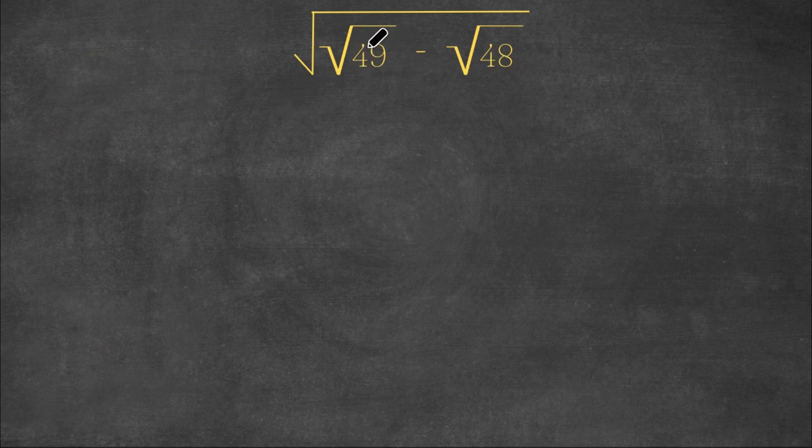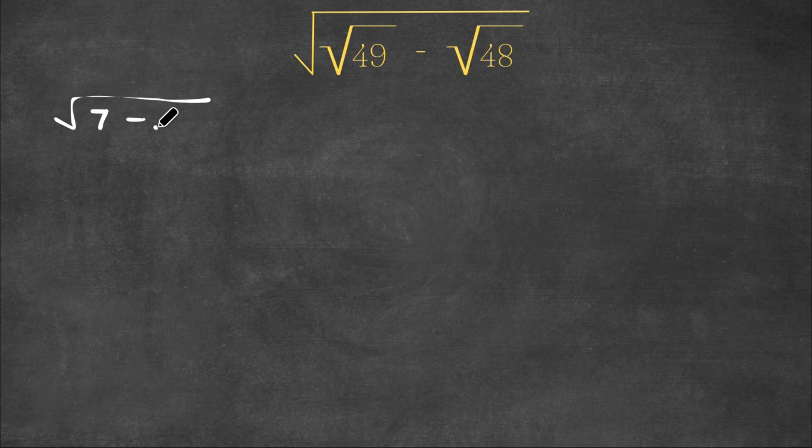Now the square root of 49, as we all know, is 7. So now we have the square root of 7 minus the square root of 48.